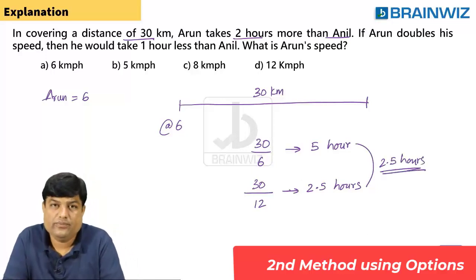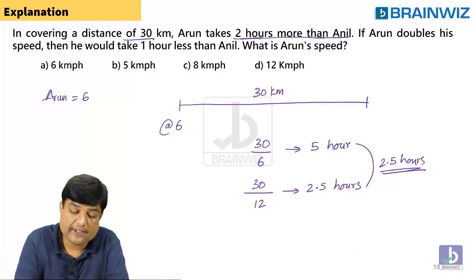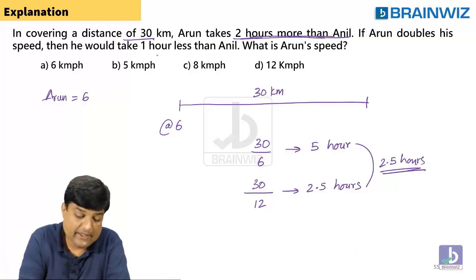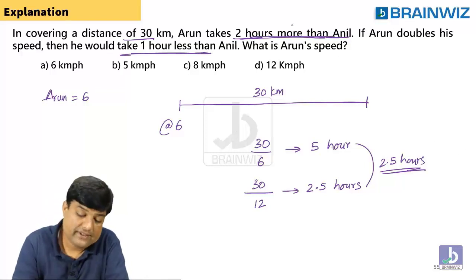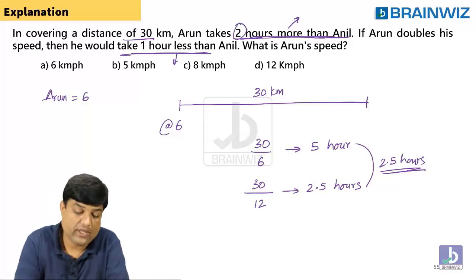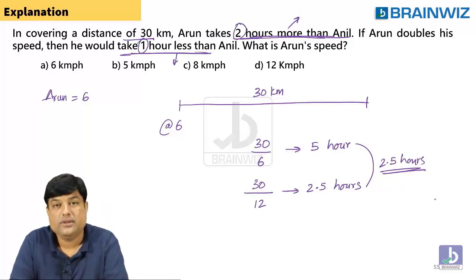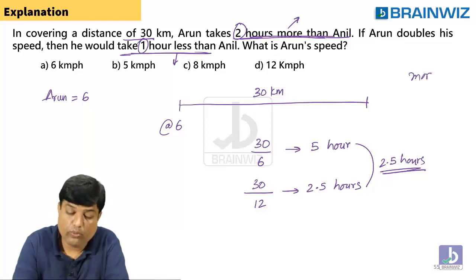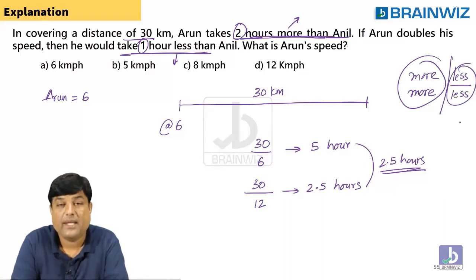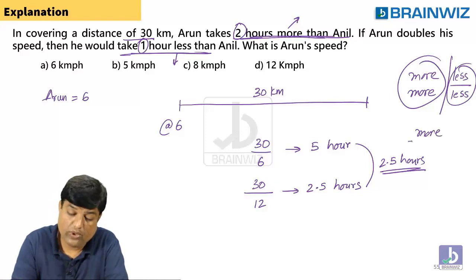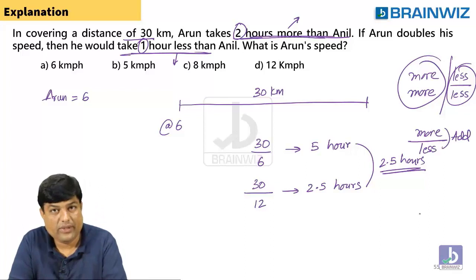One important thing: first time he is taking 2 hours more than Anil, second time he is taking 1 hour less than Anil. If the question says more and more, always subtract. If it says less and less, always subtract. But if one time it says more and another time less, always add. So 2 hours plus 1 hour gives a total gap of 3 hours.